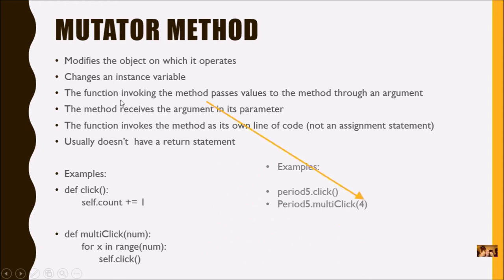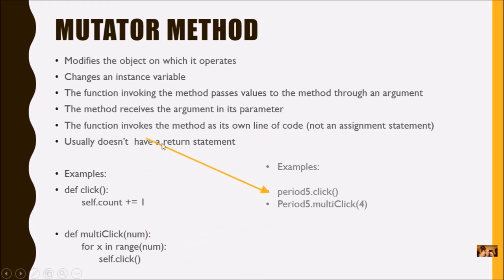So the function invoking the method passes its values through an argument, and the method receives it in its parameter. The function that invokes the method is a statement by itself — it's its own line of code. Both examples show that.